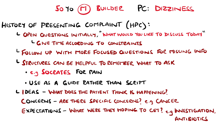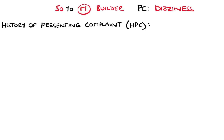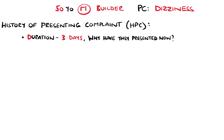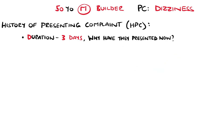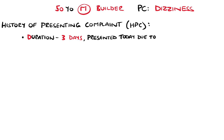We'll use a presenting complaint of feeling dizzy in the 50-year-old male builder as an example. Overall, we'd want to know how long has this problem been present — let's say three days. And it's useful to explore why have they presented now. For example, if someone has had a pain for several months, what has changed to cause them to seek help now? Asking this can help confirm continuation of a chronic problem or identify a new problem on a background of a chronic one. In this case, he may have presented because the dizziness has caused him to nearly fall over, whereas normally he is very steady on his feet.